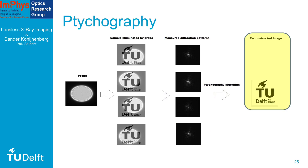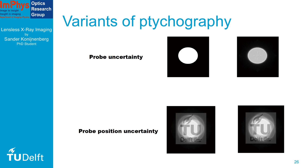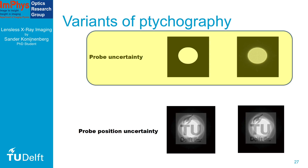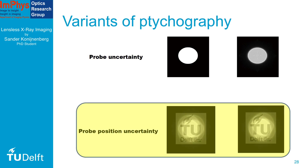The ptychographical algorithm can be extended in many different ways. For example, to obtain a good image of the object, you need to know what the probe looks like and to what positions it is shifted. If you don't know exactly what the probe looks like or what positions it is shifted to, it is possible to extend the algorithm so that it can calculate this information as well. This means that it is still possible to obtain a good image of your object, even if your setup is a bit sloppy.